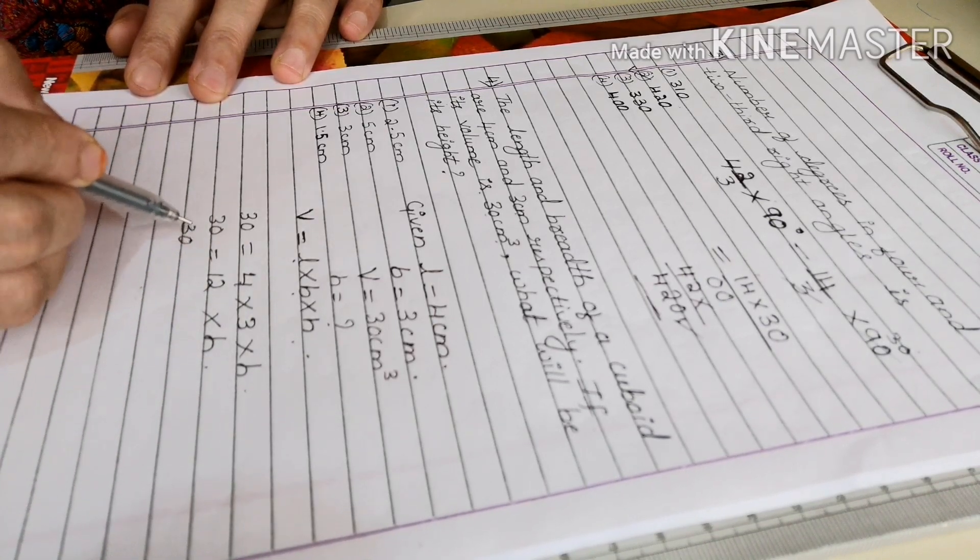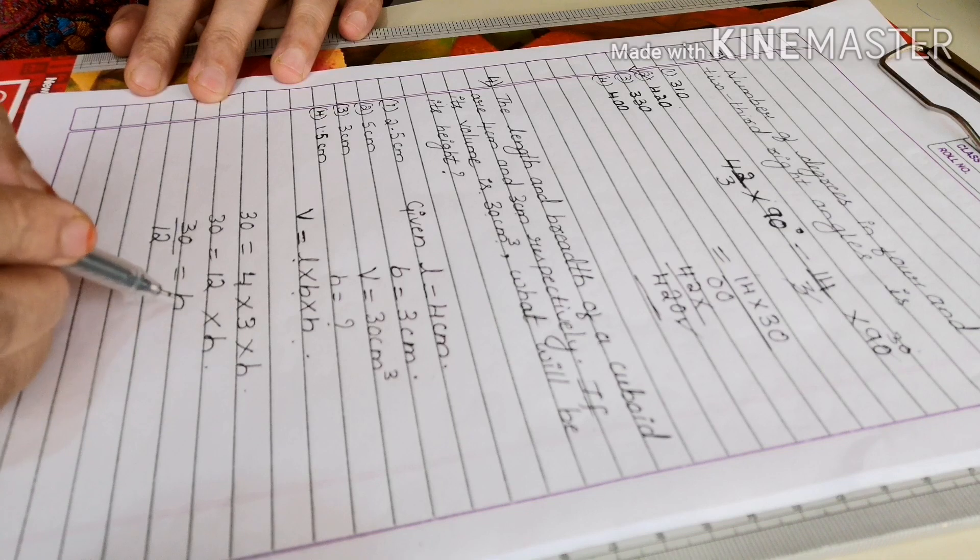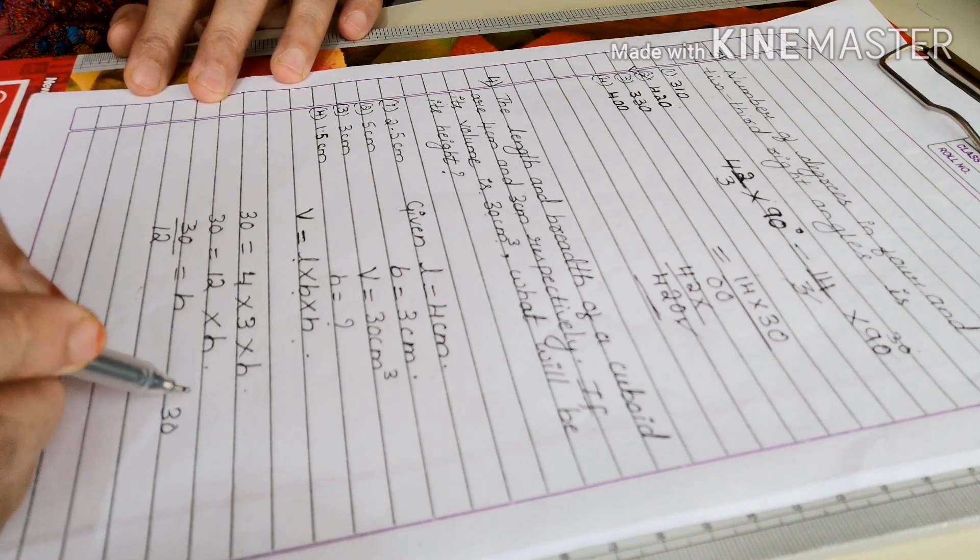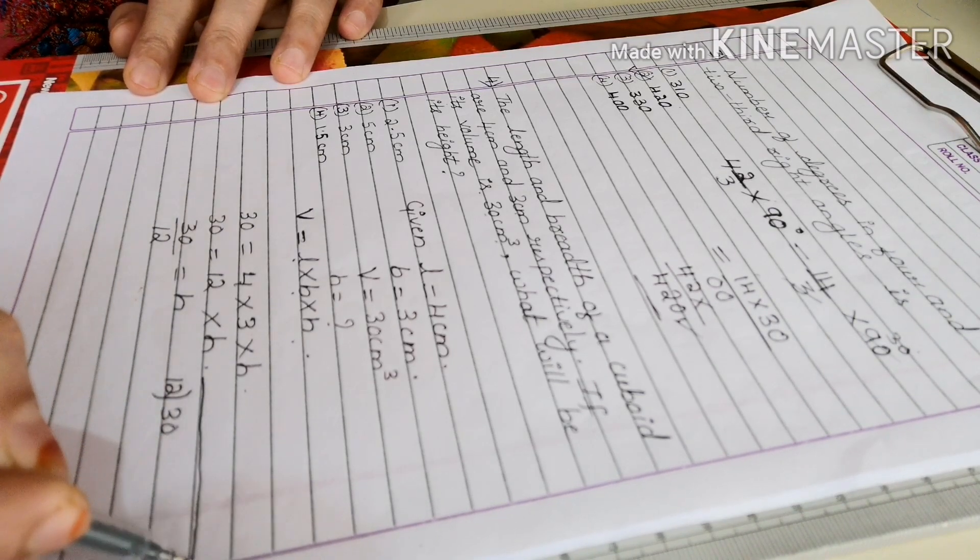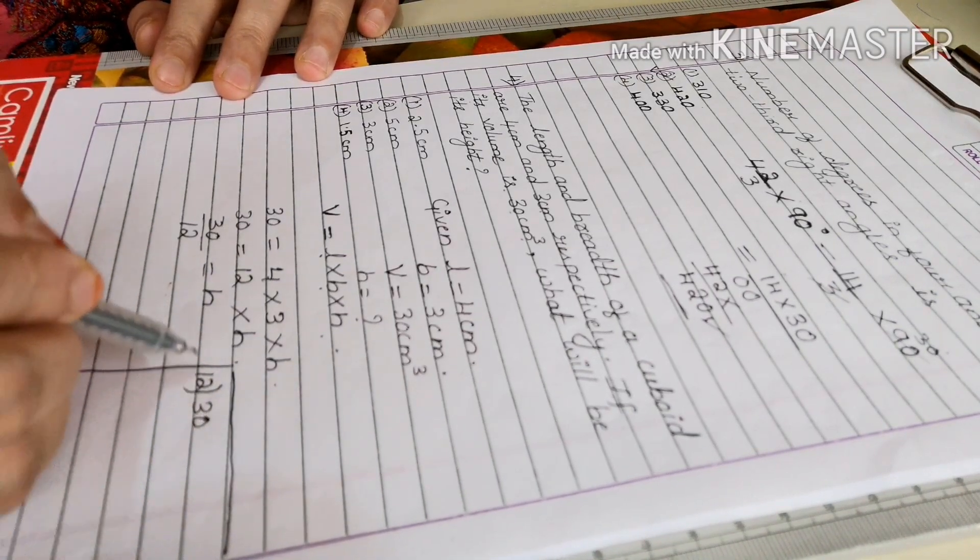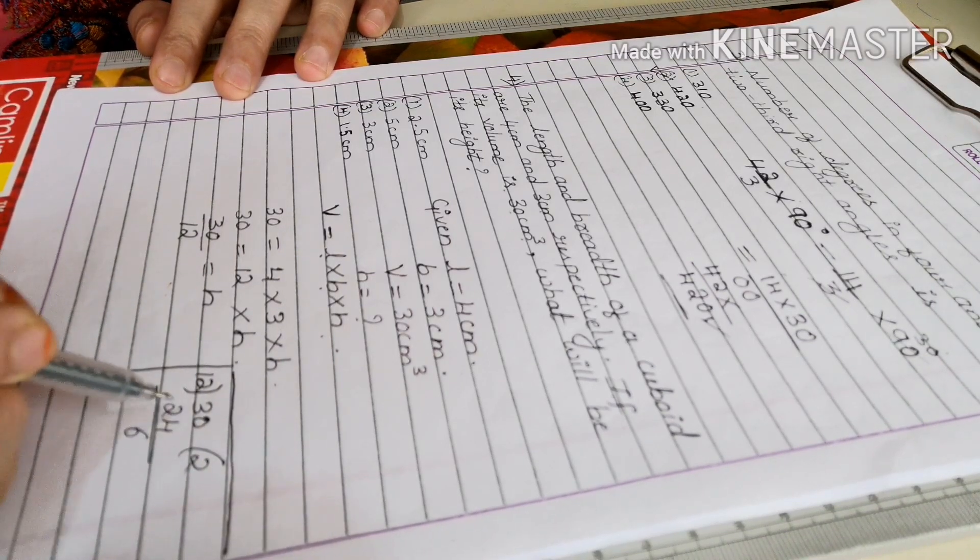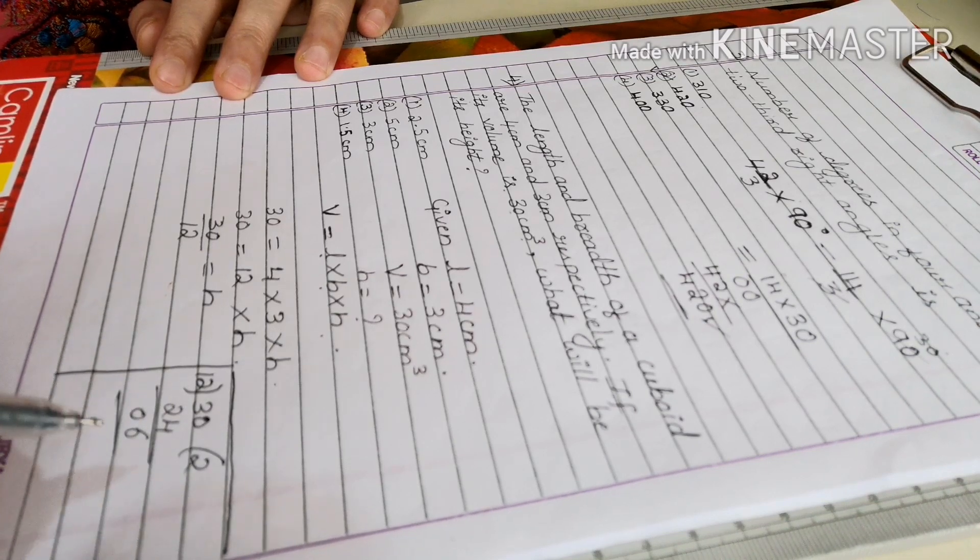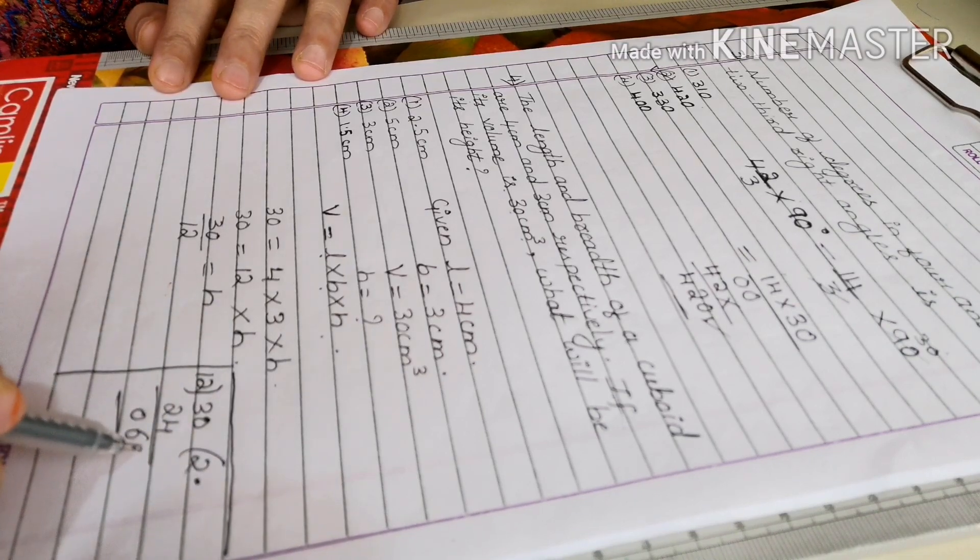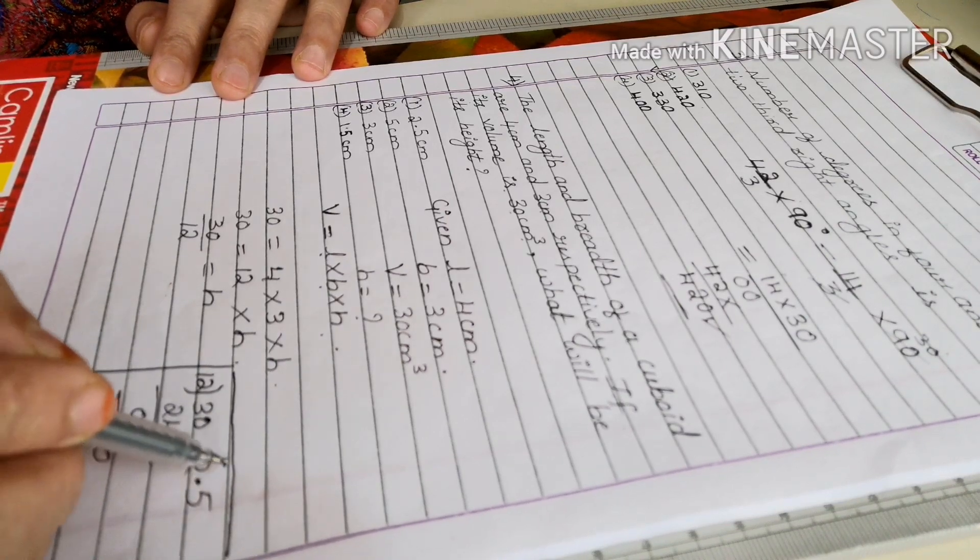Now 12 comes here. 30 divided by 12. Height is equal to this, 30 divided by 12. So 12, 12, 2s are 24, 6. So when we keep a point, 12, 5s are 60, so 2.5.